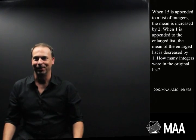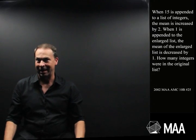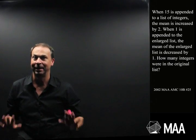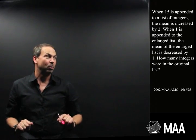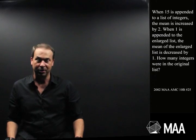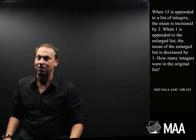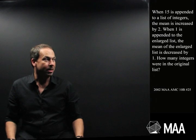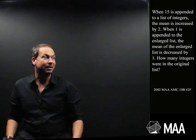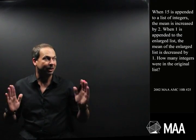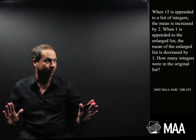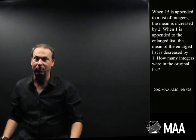G'day, welcome to another Curriculum Burst. Here's a curious statistics slash algebra question for high schoolers. It goes as follows. When 15 is appended to a list of integers, the mean is increased by 2. When 1 is appended to the enlarged list, the mean of the enlarged list is decreased by 1. How many integers were in the original list?